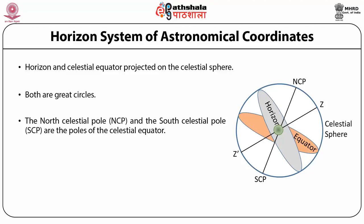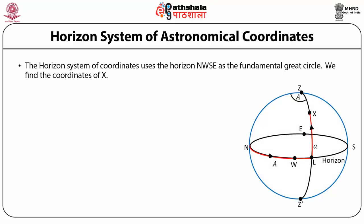The celestial north pole and south pole are the poles of the celestial equator, and the zenith Z and nadir Z' are the poles of the horizon. In the horizon system of coordinates, the horizon NWSE is the fundamental great circle. The great circle through the zenith and nadir of the observer is called the observer's meridian or local meridian, passing through N and S which are the points of intersection of the horizon and the observer's meridian. N and S indicate the geographical north and south directions, and N is taken as the reference point.